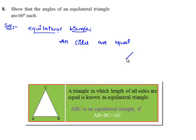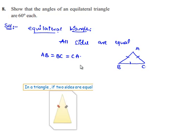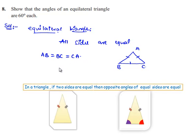Let us draw an equilateral triangle ABC in which all the sides are equal, that is AB is equal to BC is equal to CA. We know that in a triangle, the angles opposite to equal sides are equal. Therefore, angle A is equal to angle B is equal to angle C.